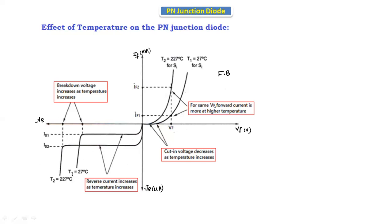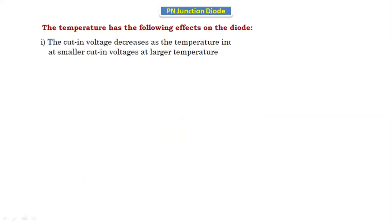Now let's summarize the overall effects of temperature on the diode. The first effect: the cut-in voltage decreases as the temperature increases, as observed in the V-I characteristic. The diode conducts at a smaller cut-in voltage at larger temperatures.